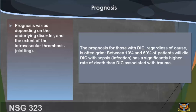Prognosis varies depending on the underlying disorder and the extent of the intravascular thrombosis and clotting. The prognosis for those with DIC regardless of cause is often grim; between 10% and 50% of patients will die. DIC with sepsis or infection has a significantly higher rate of death than DIC associated with trauma.